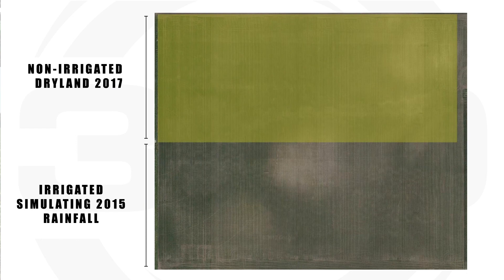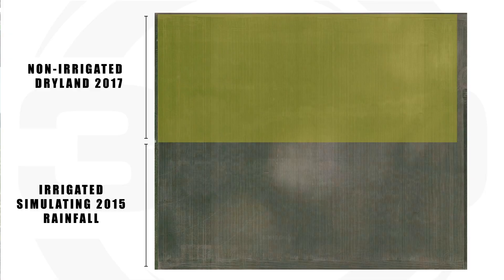In the plot we're standing, you can see the irrigator behind me. We split this plot in half. We had a north half that was nature, just regular rainfall. Where I'm standing here in the south half, we duplicated the 2015 rain pattern, which for us was the wettest of all time and it was an extreme amount of rain.